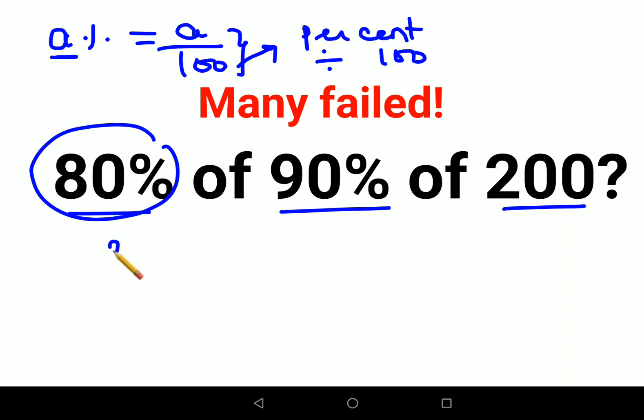So now here we will write this as 80 upon 100. Of in mathematics is always multiplication. Similarly, 90 upon 100 into 200.